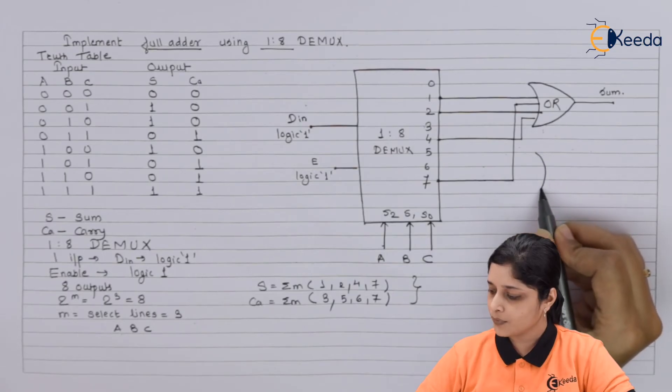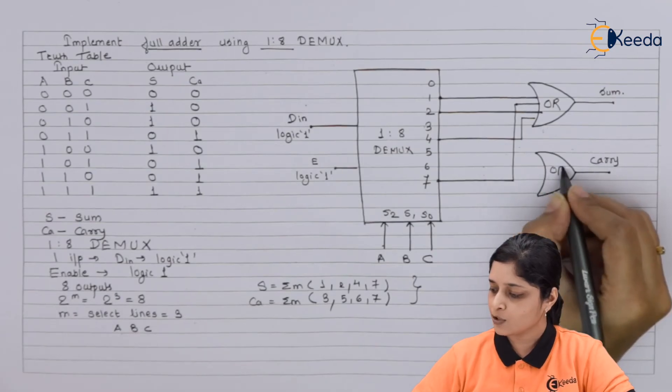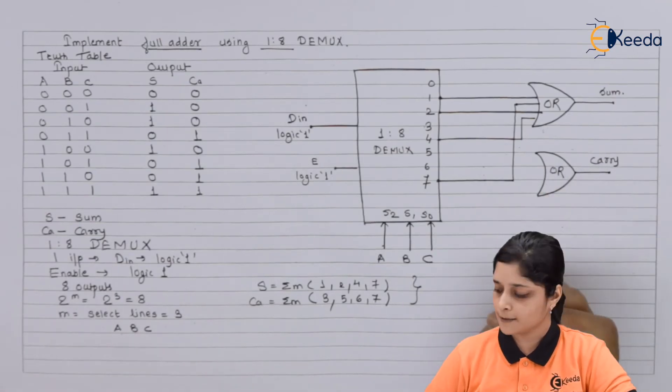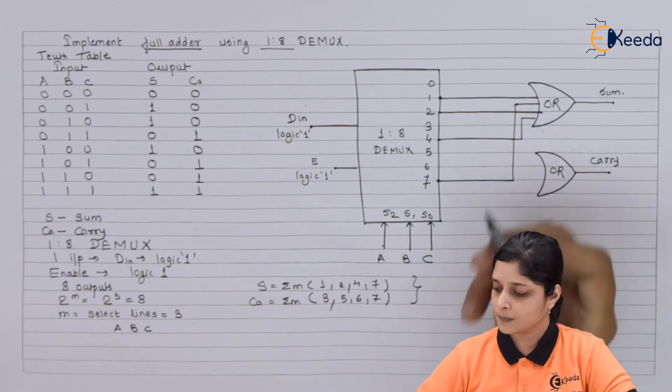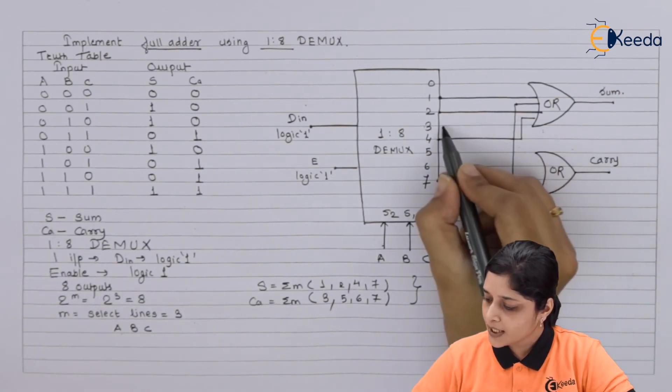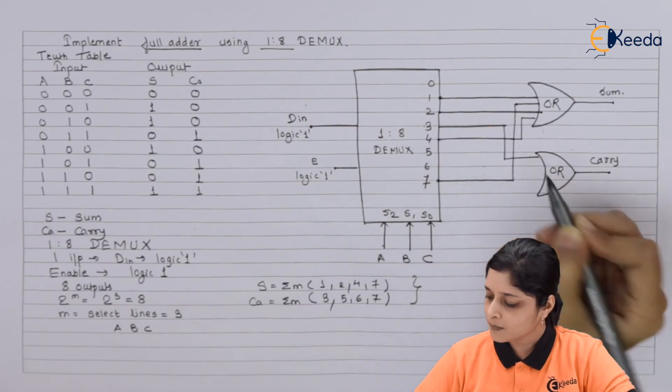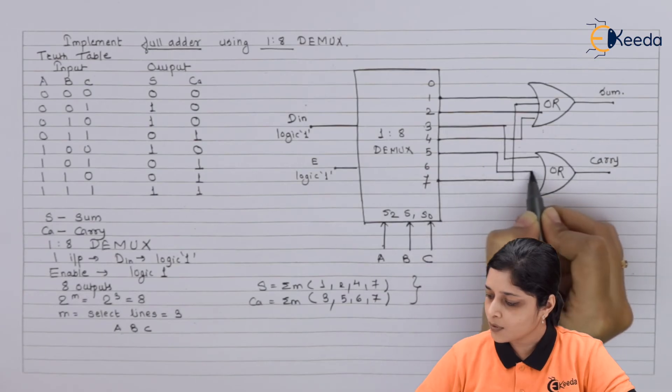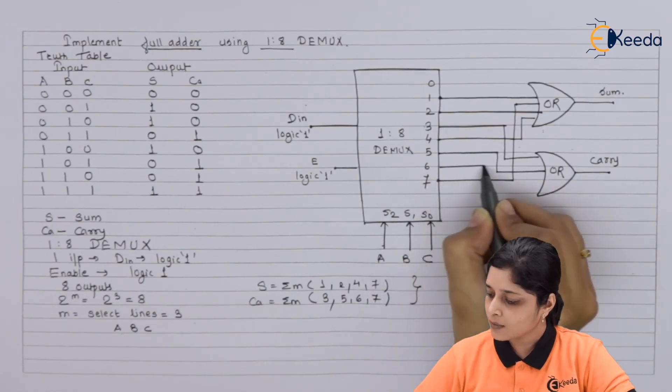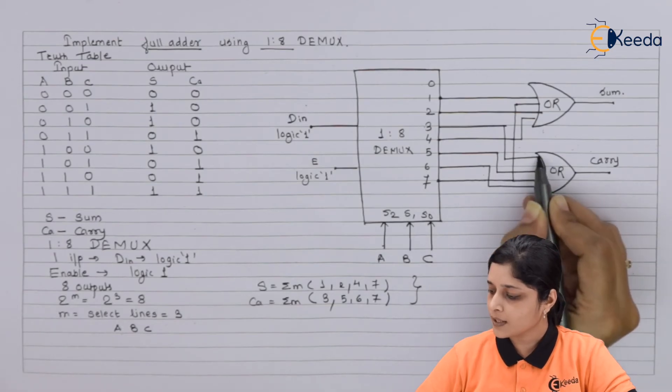After that you have carry. Here also you are going to use OR gate. Now for carry you have 3, 5, 6 and 7. So we are going to take here this 3 terminal, then 5, we are going to focus on 5, then 6 and 7 you have directly over here.